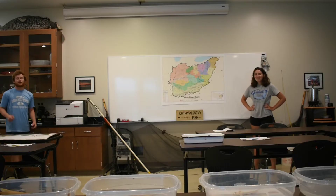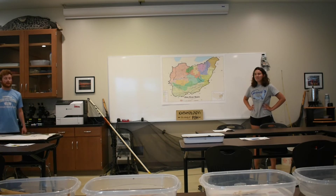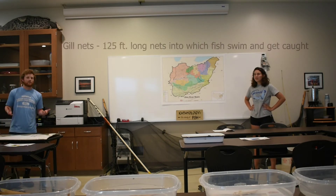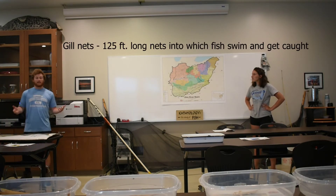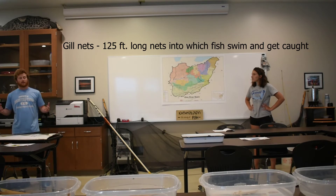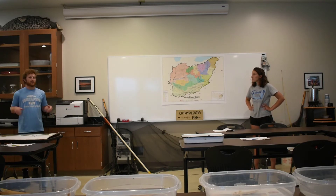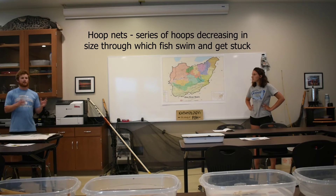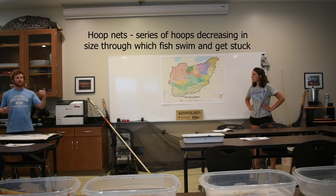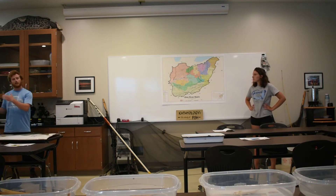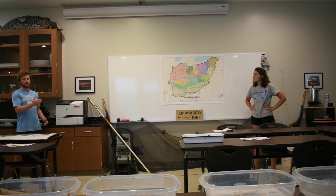There are also nets that help us collect from the river. There are gill nets, which are 125-foot-long nets set out in the river to help collect big river fish. There are also hoop nets, which are a series of hoops that slowly get smaller through the back, so that a fish can swim in all the way back to the bait and not be able to swim out.